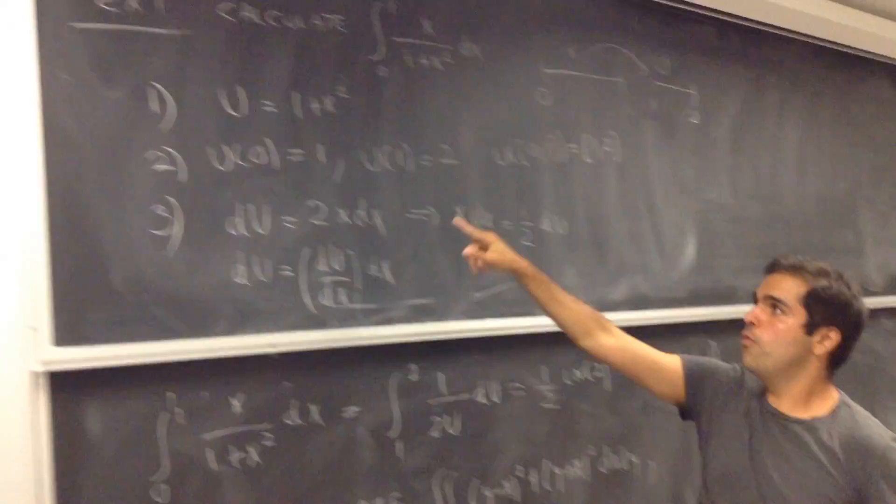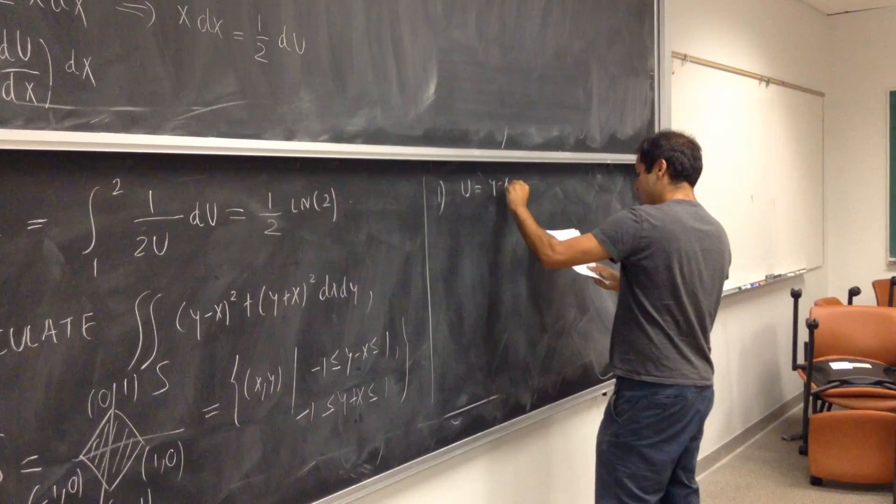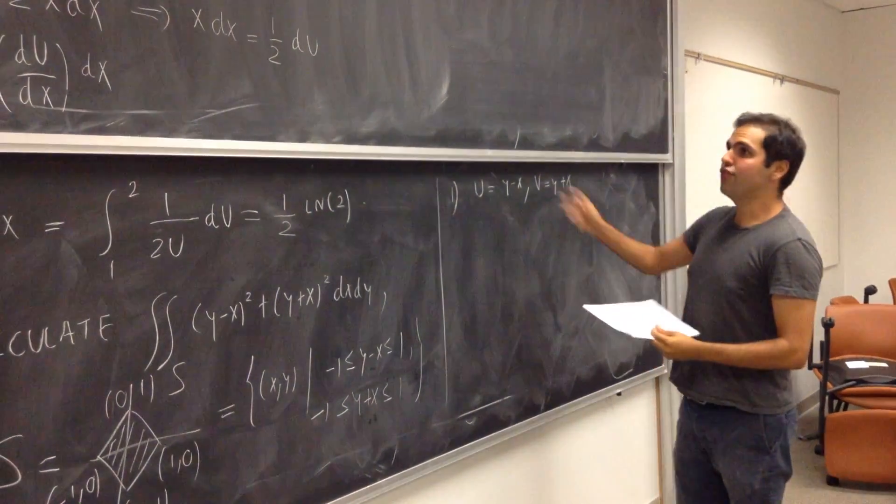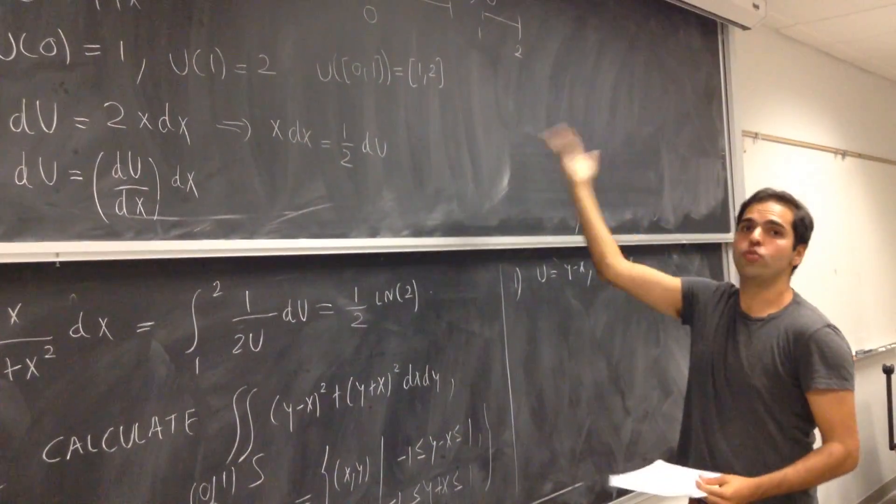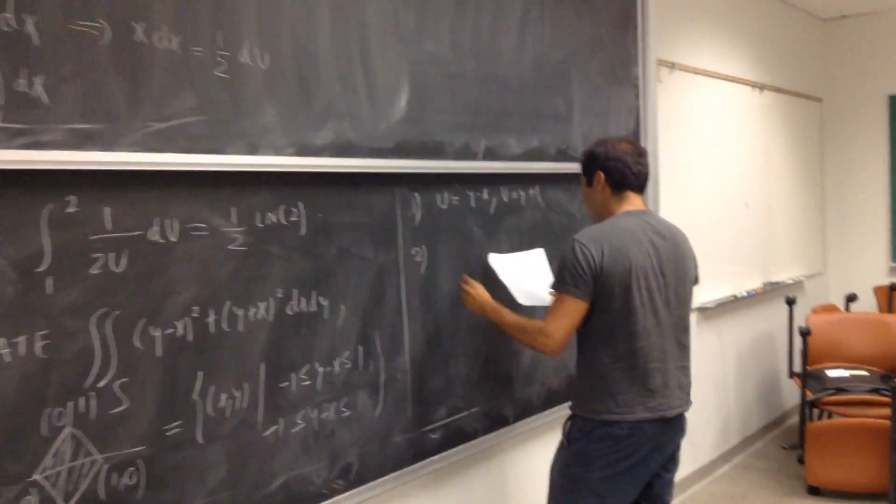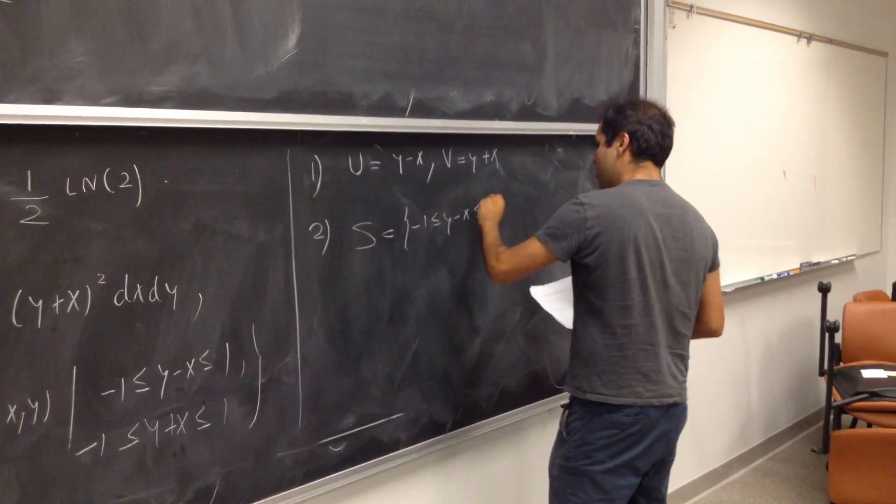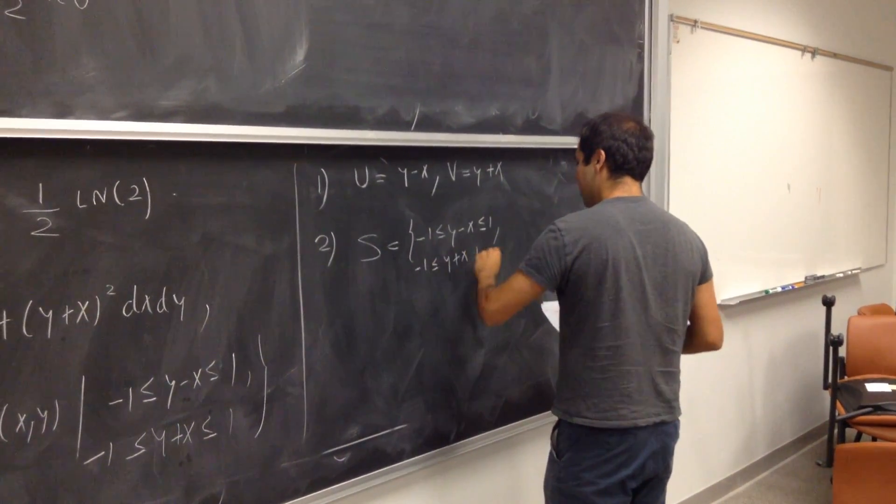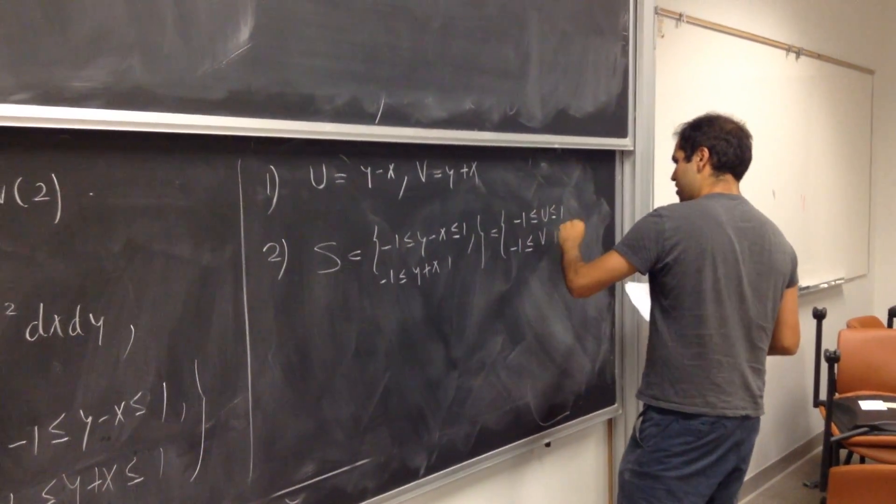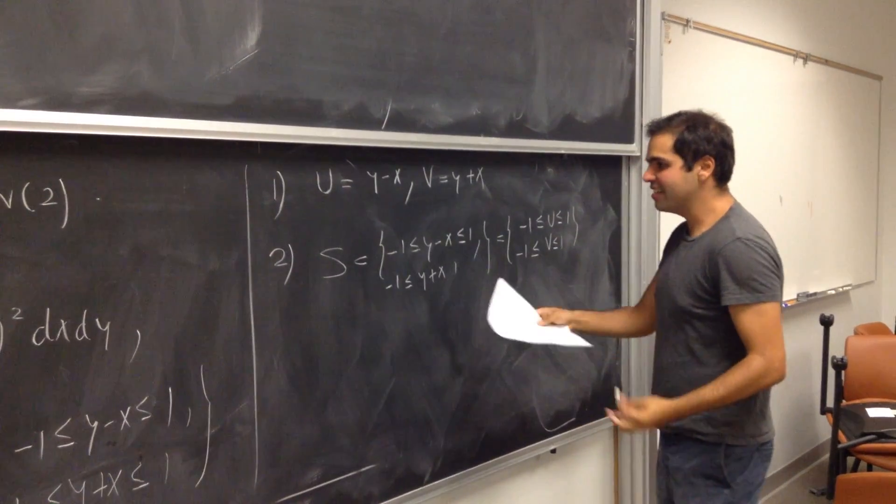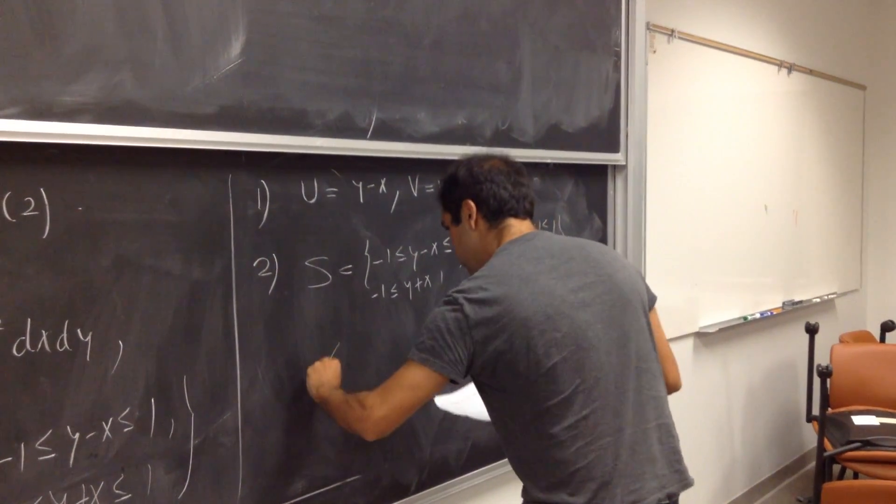So, just like before here, we add u to be our new variables. Well, here, we want two new variables, u is y minus x and v is y plus x. That's the first thing we did. The second thing we want to figure out is what happens to the square when we apply u and v to it. And notice the following, so, s is really the set where y minus x is between minus 1 and 1, and y plus x is between minus 1 and 1. Well, it's really the set where u and v are between minus 1 and 1. Because u is y minus x, v is y plus x. In other words, once you apply this change of variables, this diamond will actually become a square.